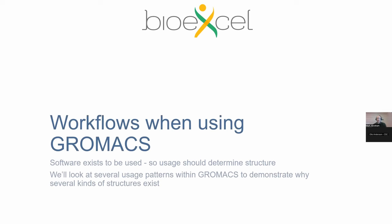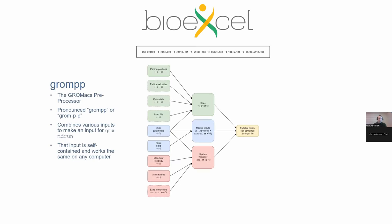Software always exists to be used — it's never done, it's always changing, or it's not being used. Usage really needs to be reflected in the structure of the software, and so it is with GROMACS. One of the first workflows new users encounter is the GROMACS preprocessor workflow — GROMPP — which is an extremely valuable part of the GROMACS simulation engine. We're a big fan of this approach because it gives users and developers key advantages.